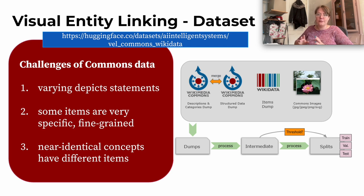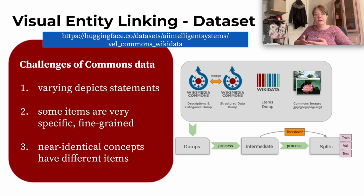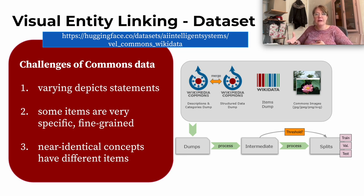We also found, while manually investigating the data, that the model often performs a lot better when you look at it with a human eye than the raw numbers show, because the raw numbers simply ask whether it has been previously linked. If we have very similar concepts, or concepts that are more broad or narrow, and the model tries to predict those, our metrics penalize those predictions.